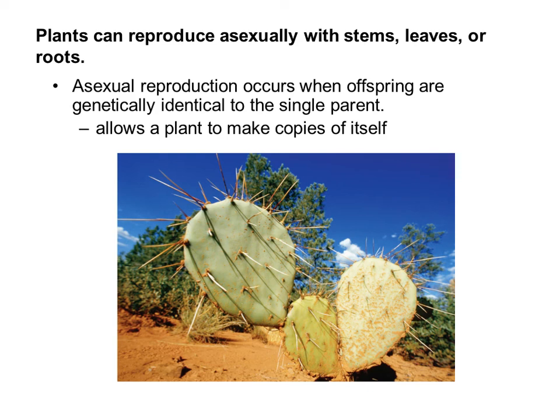Asexual reproduction is a characteristic that many succulents can do. For example, a cactus or aloe vera plant can grow such that you can remove part of the plant, plant it somewhere else, and it will continue to grow — but it is a clone of the original plant.